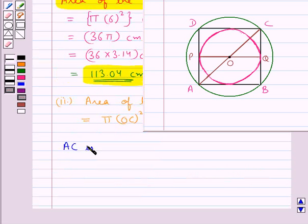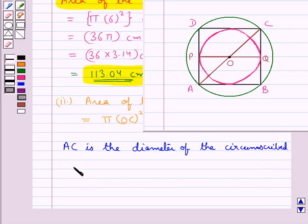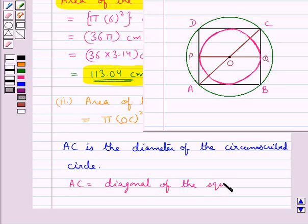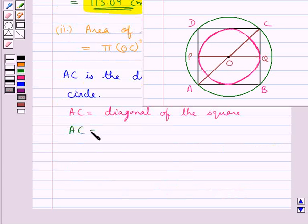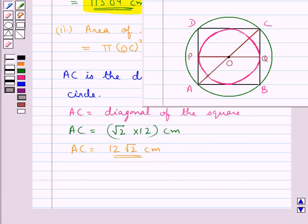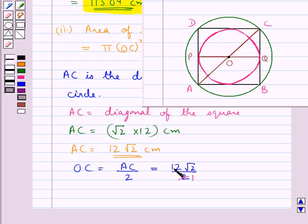AC is the diameter of the circumscribed circle. AC is also the diagonal of the square, and the diagonal of a square is given by root 2 into the side, that is root 2 into 12 cm. So AC = 12 root 2 cm. Now OC = AC / 2, since O is the center of the circle. So OC = 12 root 2 / 2 = 6 root 2 cm.